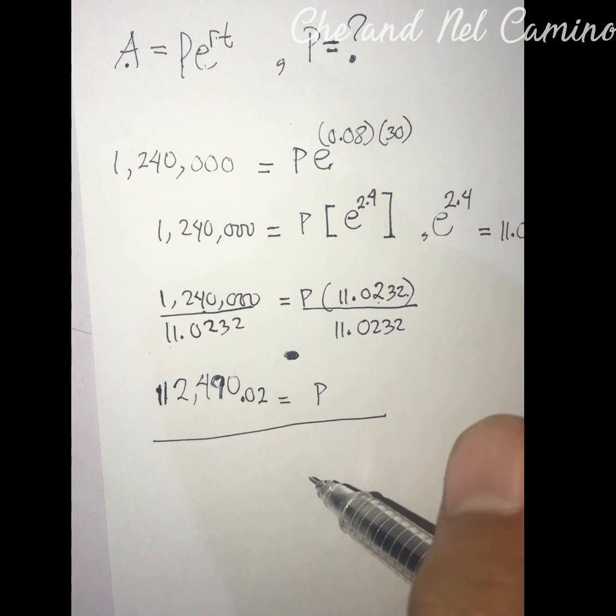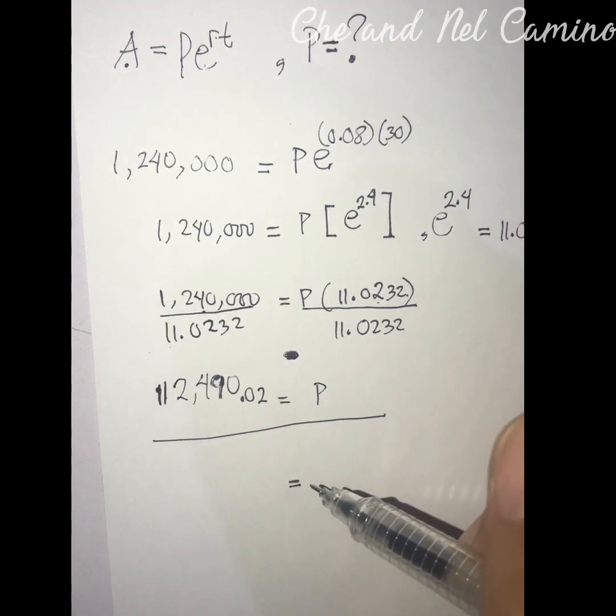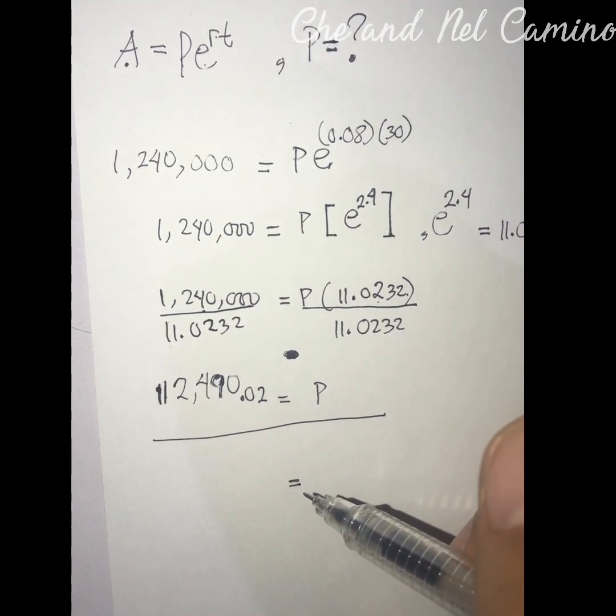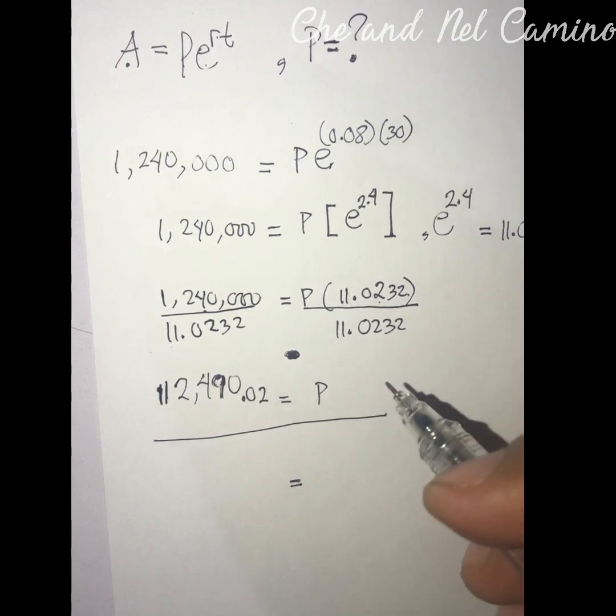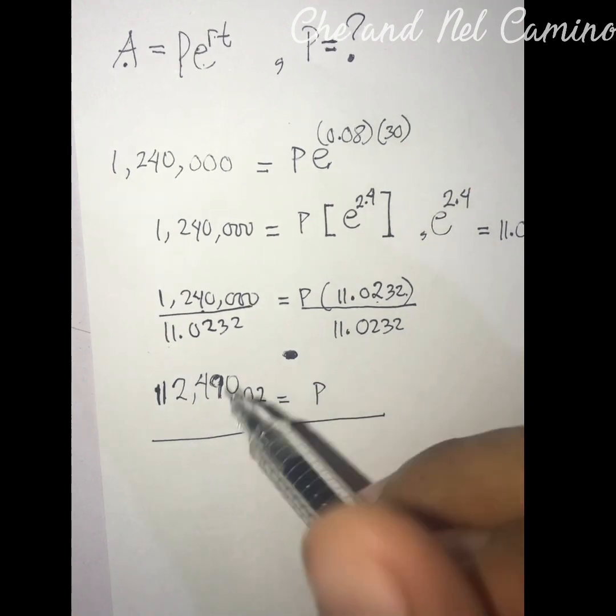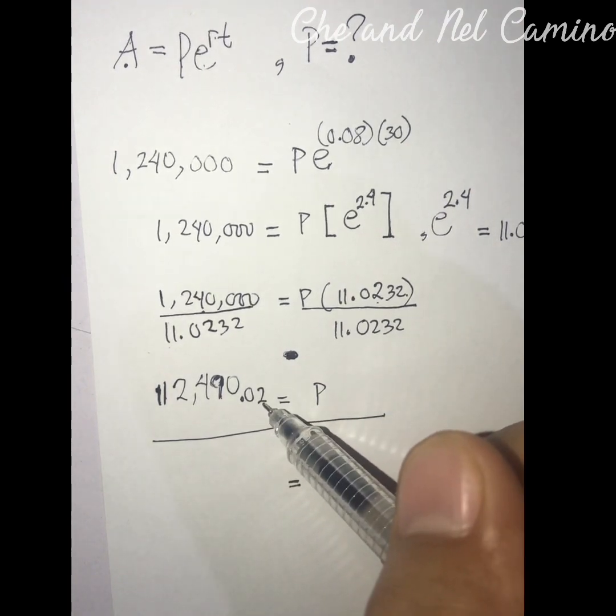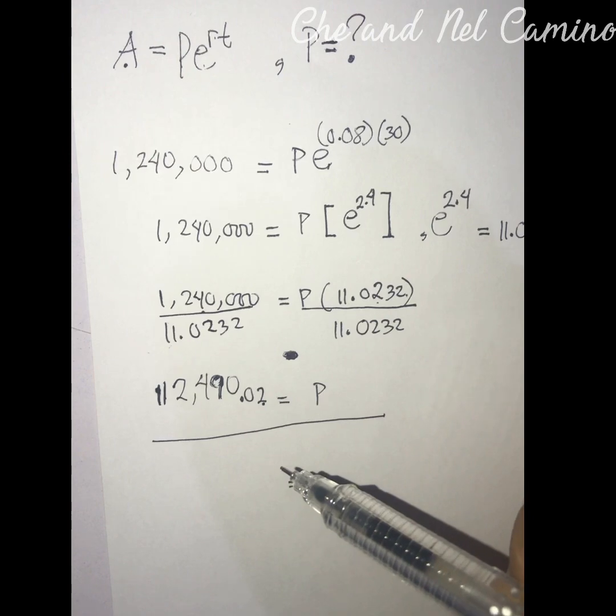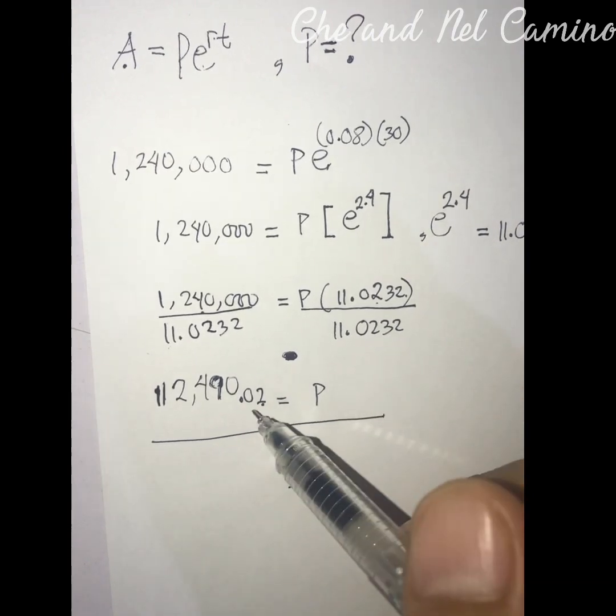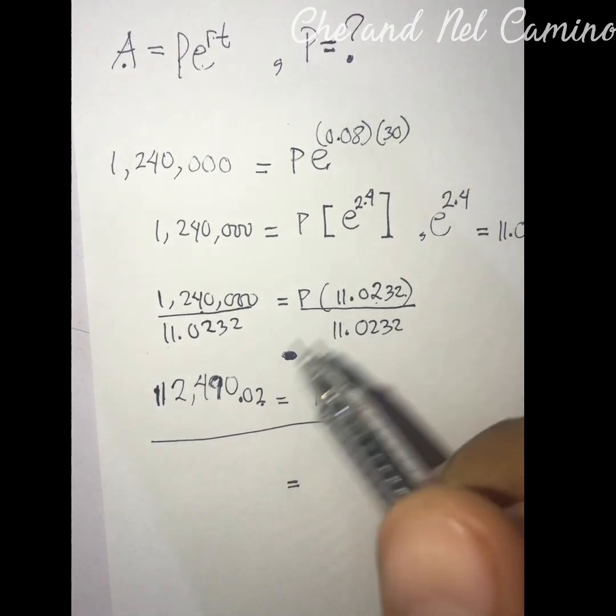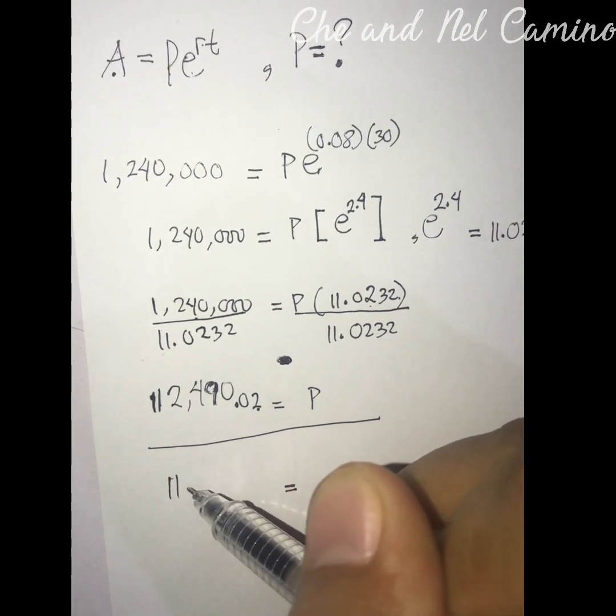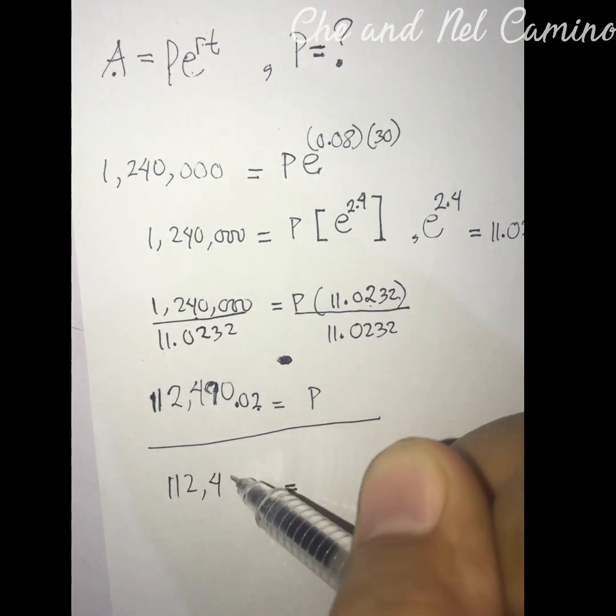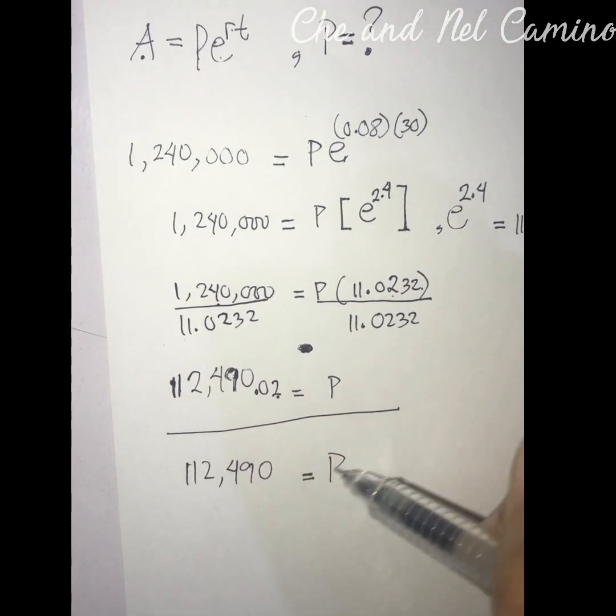Let's imagine that whatever population we are talking about, whether it is the population of bacteria or the population of humans, we cannot have 0.02 or a decimal person or bacteria. That means to say we will eliminate the decimal numbers and round it off.